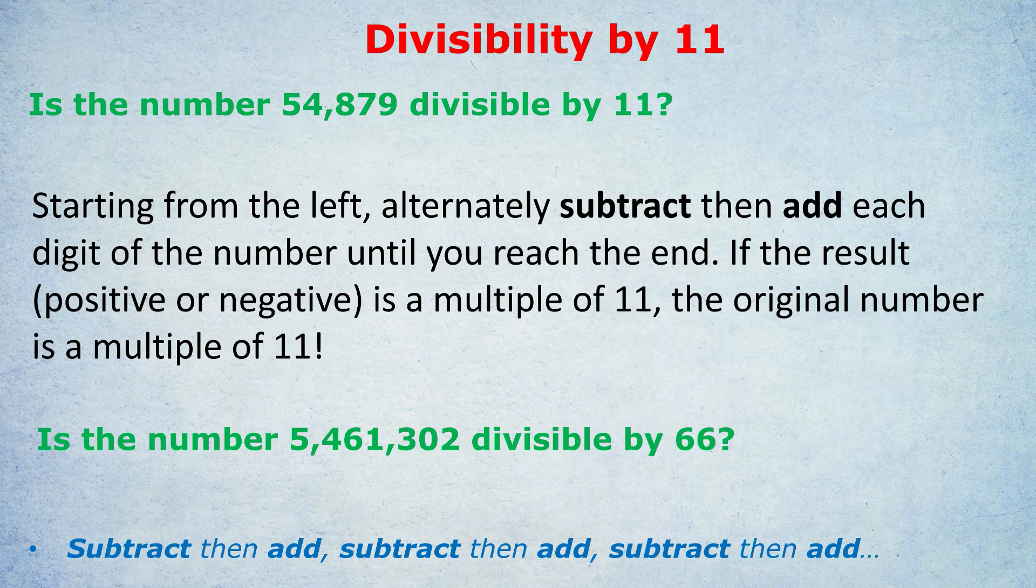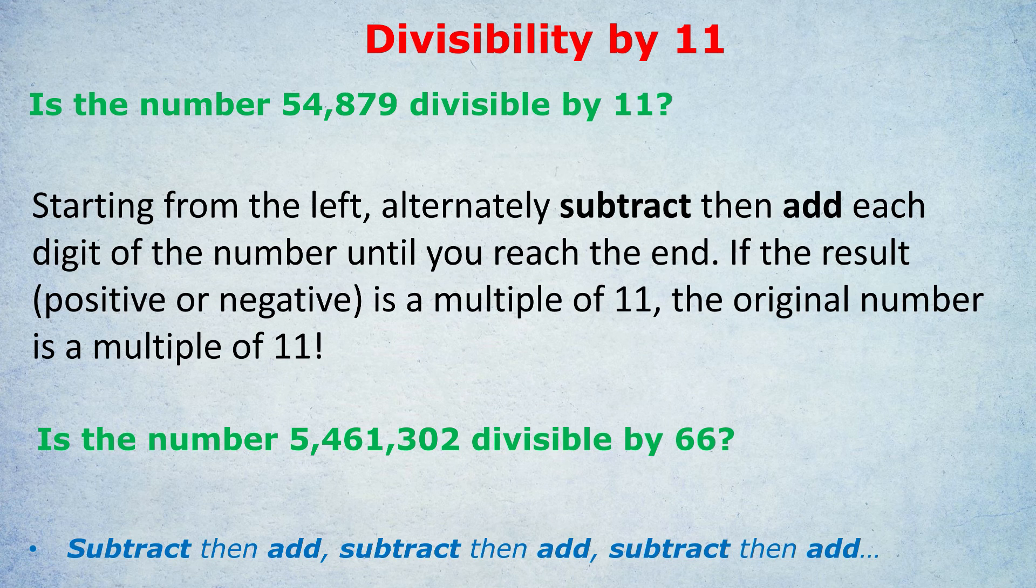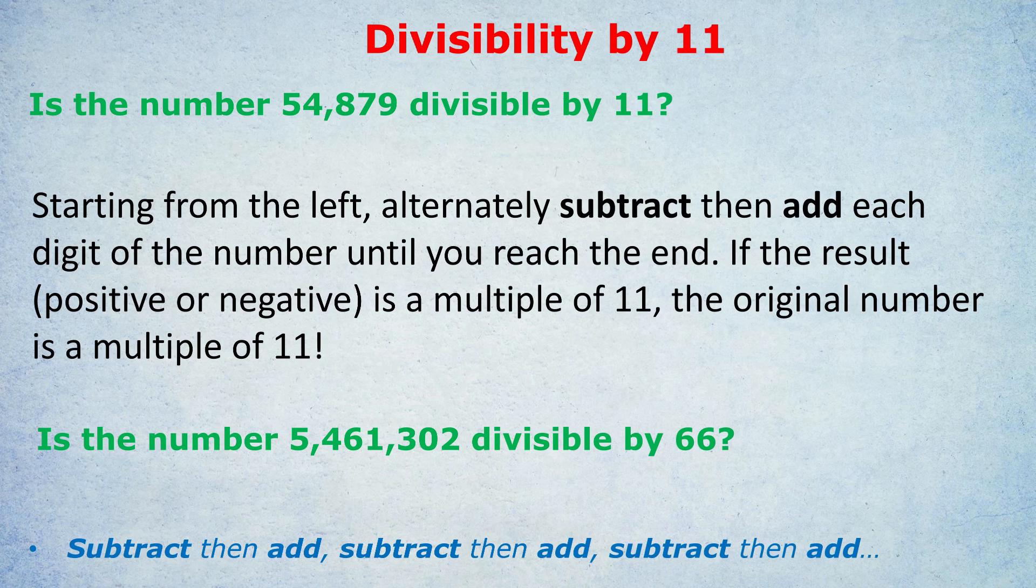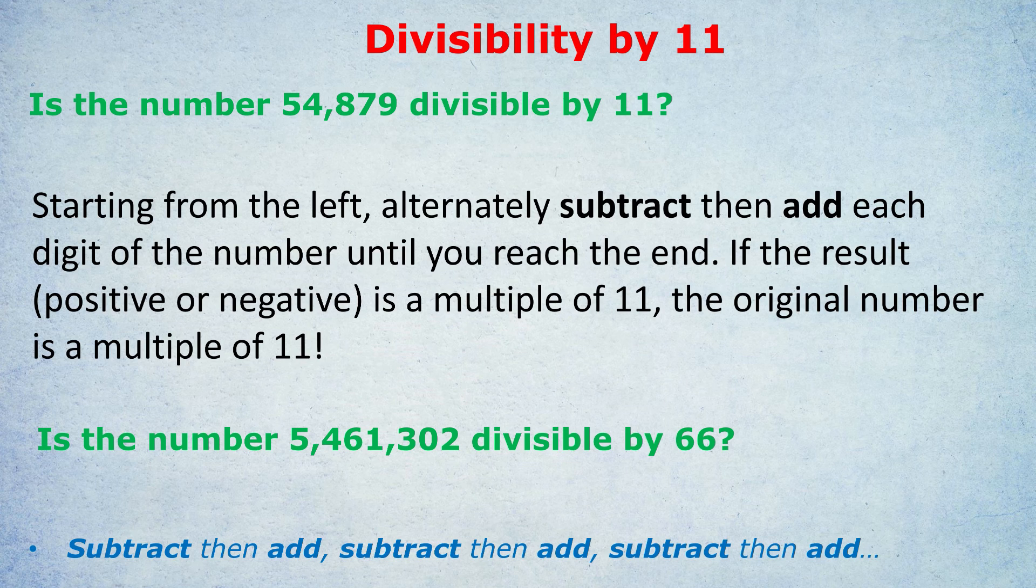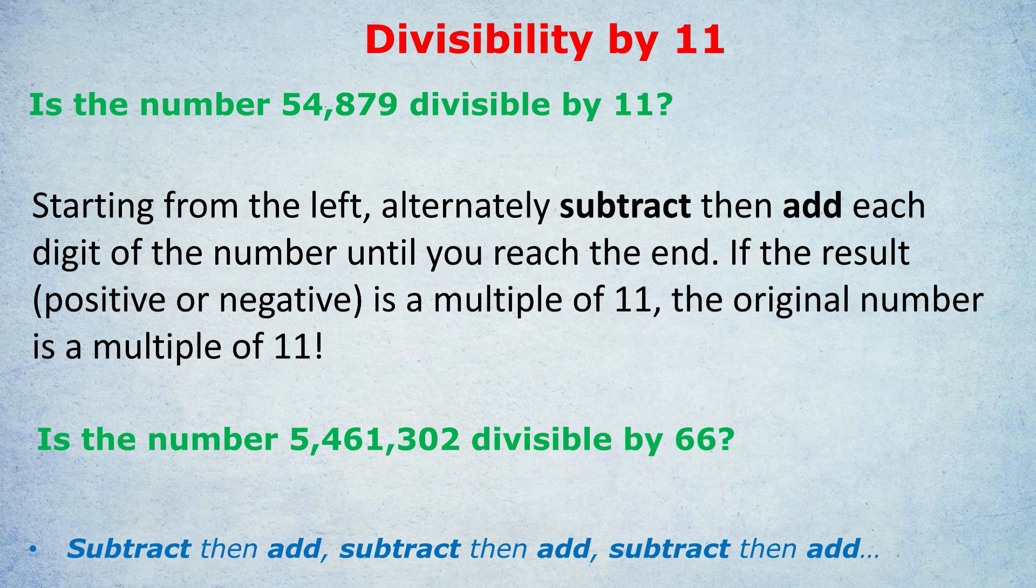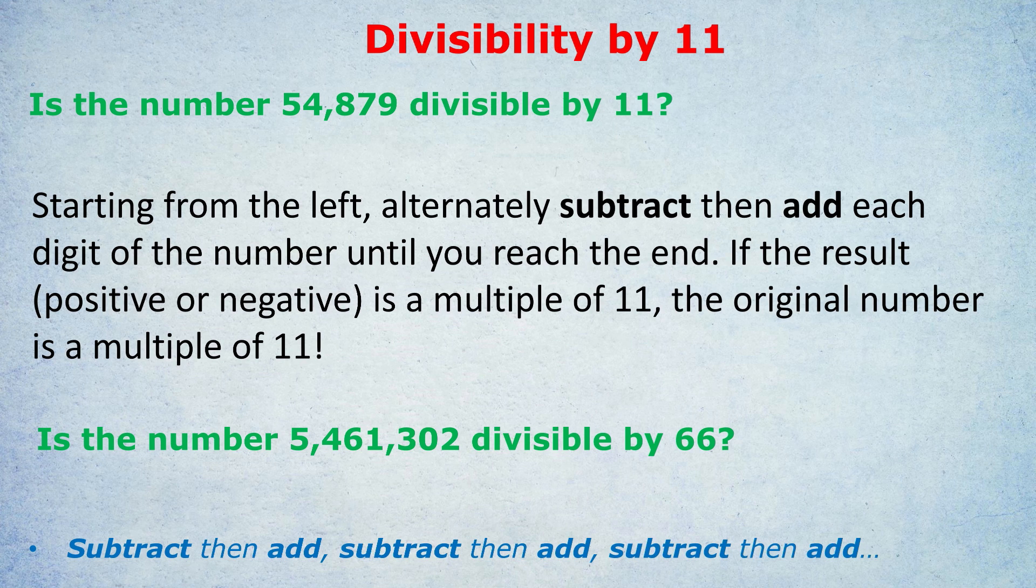Okay, is it divisible by 6? To be divisible by 6, it has to be an even number. Tick. It is an even number. Ends in a 2, this epic number. So it is even. Is it divisible by 3? Let's add up the digits. 5 plus 4 is 9, plus 6 is 15, plus 1 is 16, plus 3 is 19, plus 0 is 19, plus 2 is 21. 21 is a multiple of 3. So finally, we've got an example where it works. Because 21 is a multiple of 3, that number is divisible by 3. And we already know it's divisible by 2 because it's even. Therefore combined, it's divisible by 3 and divisible by 2. Therefore, it's divisible by 6.